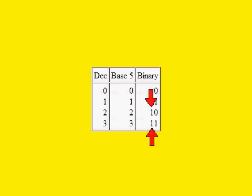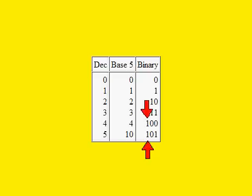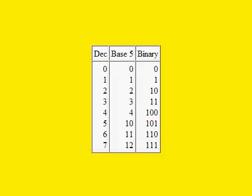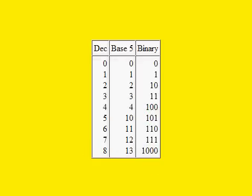Which means we need to add a position — the twos position. But that will only cover two more counts as the binary ones position runs out of symbols in both the ones and twos position. And by the time we get to decimal eight, the binary number is up to four digits, known to geeks as bits.